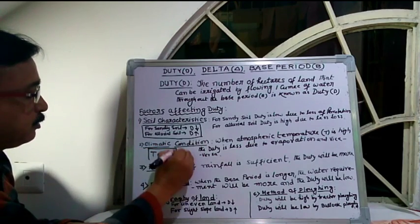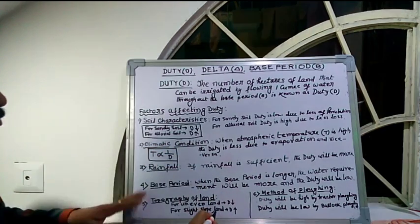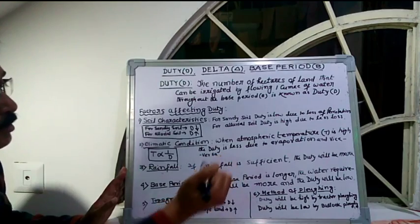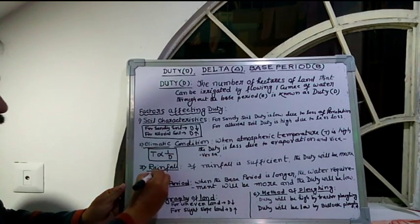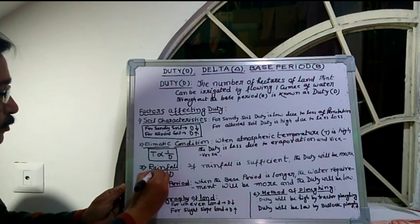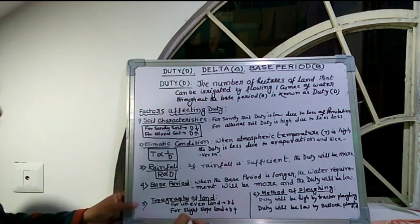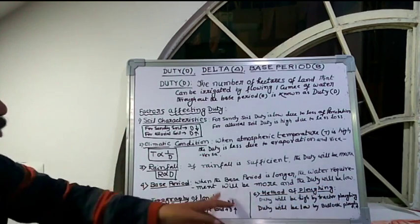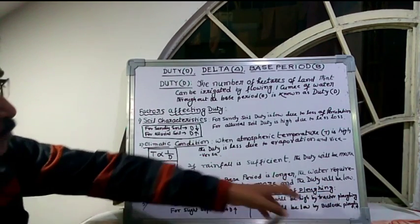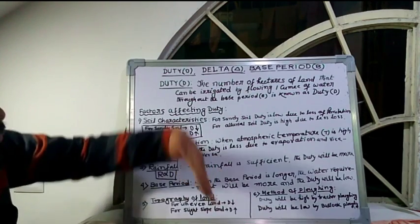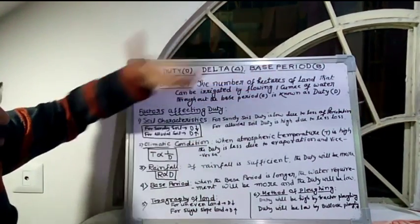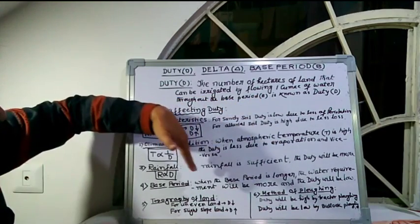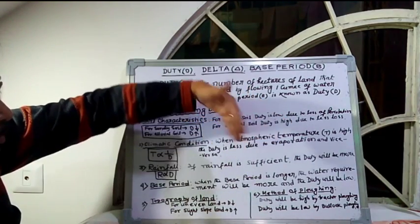Next factor: rainfall. If rainfall is sufficient, the duty will be more — that is, R is proportional to D. This is the memory point. Next factor: base period. When the base period is long, the water requirement will be more, meaning more water is needed and duty is affected accordingly.